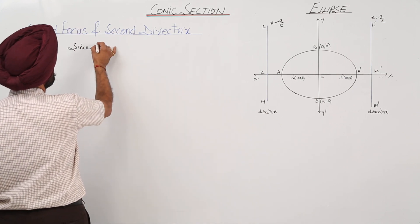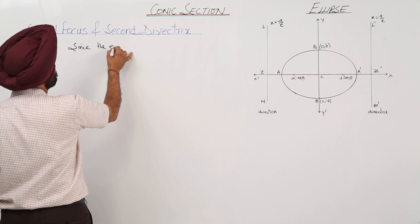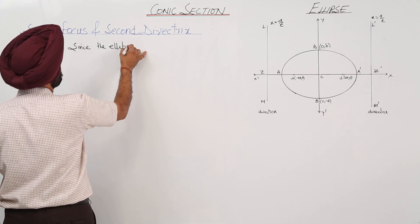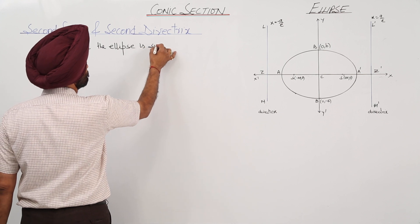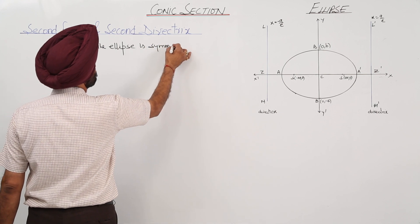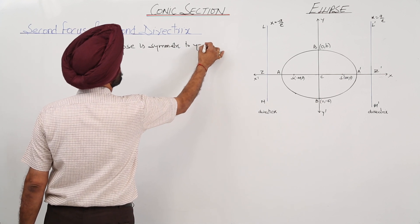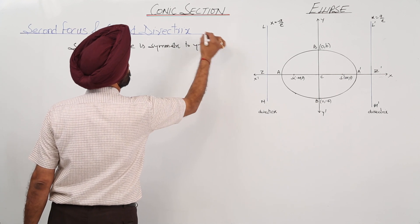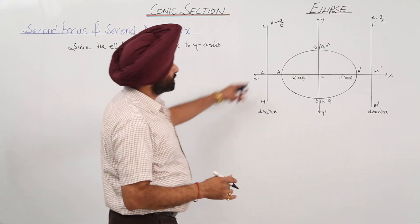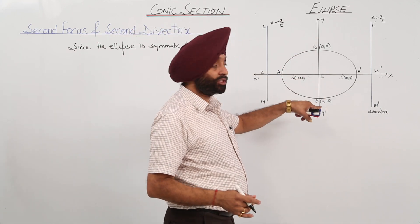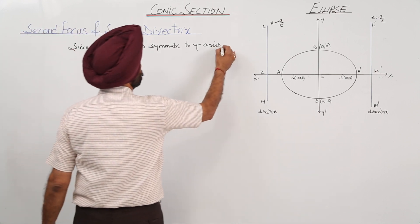Since the ellipse is symmetric to y axis, this ellipse is also symmetric to y axis.